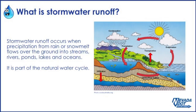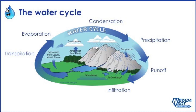It is part of the natural water cycle. Stormwater runoff is one of the processes of the natural water cycle. The other processes are evaporation, when water is heated by the sun, changes into a vapor, and goes into the atmosphere; condensation, when the water in the atmosphere is cooled and forms clouds; and precipitation, when water from clouds is released in the form of rain or snow.